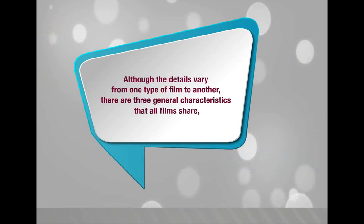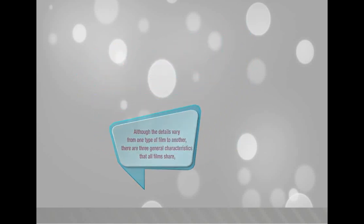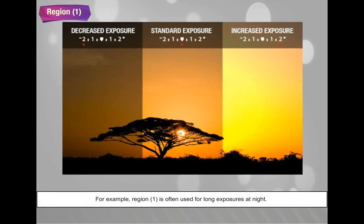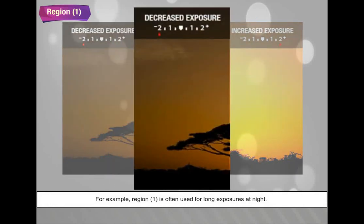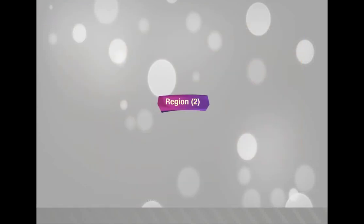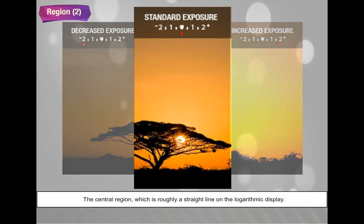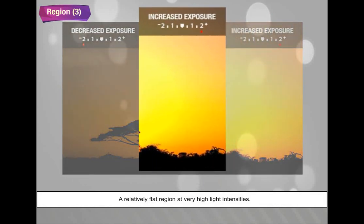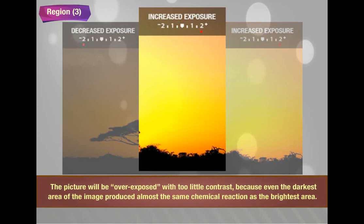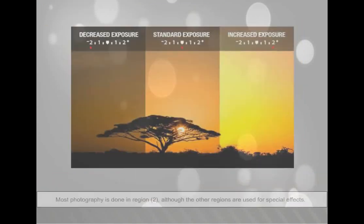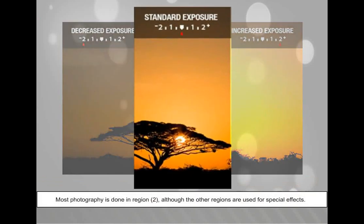Although details vary from one type of film to another, there are three general characteristics that all films share. Region 1: a relatively flat region at very low light intensities — a wide range of exposure times produces about the same underexposed image. Region 2: the central region, which is roughly a straight line on the logarithmic display — equal changes in intensity produce roughly equal changes in the density of the film exposure. Region 3: a relatively flat region at very high light intensities where the picture will be overexposed with too little contrast. Most photography is done in region 2, although the other regions are used for special effects.